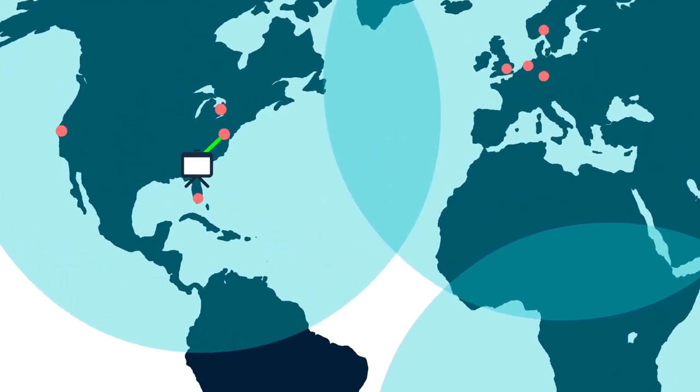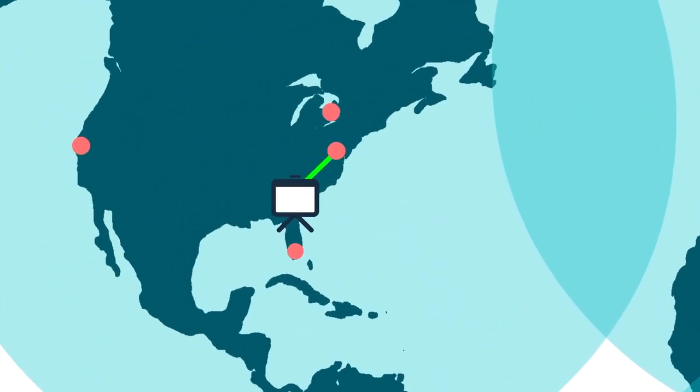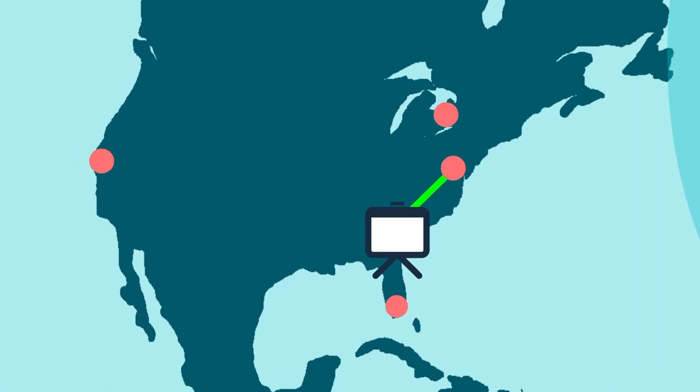You are also registered to a global registration service, so if your primary registration service goes out of service, your video system will re-register to the secondary registration service automatically. The end customer doesn't have to do anything — everything will happen automatically.